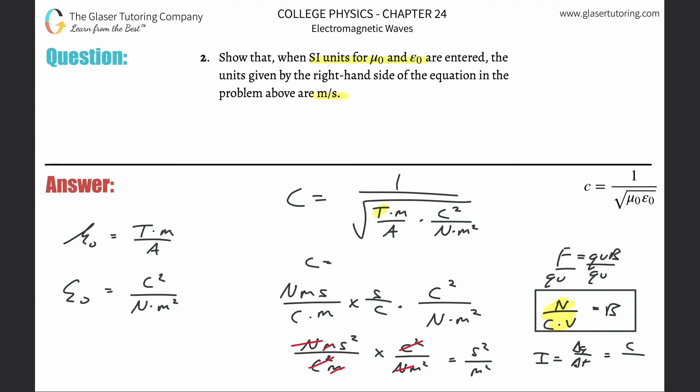Now we have that the speed of light equals one over the square root of seconds squared over meters squared. This is one over seconds per meter. Take the reciprocal of this and that's meters per second. There you go guys, thanks so much for tuning in. I appreciate it, hopefully this helped, and I look forward to helping with more problems. Take care.